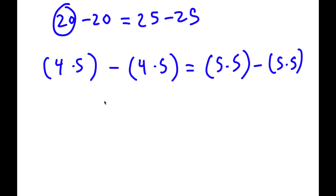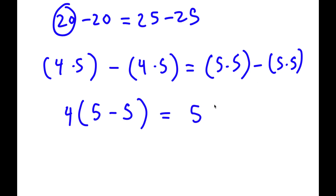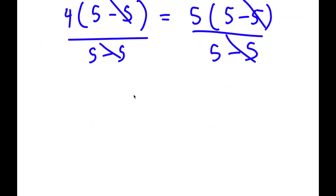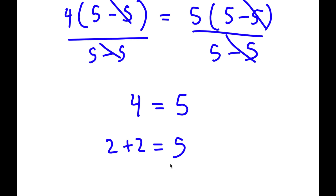From here, if I factor out 4 from the left-hand side, I get 4 times 5 minus 5. And for the right-hand side, if I factor out 5, I get 5 times 5 minus 5. Now if I divide both sides by 5 minus 5, these cancel out, and I am left with 4 is equal to 5. And 4 is the same thing as 2 plus 2, so I have 2 plus 2 is equal to 5. So I just proved that 4 equals 5 and 2 plus 2 is equal to 5.